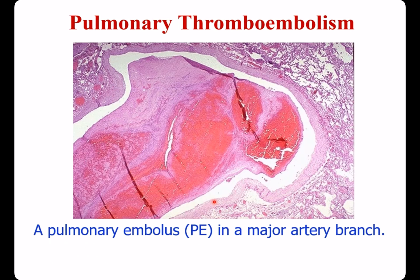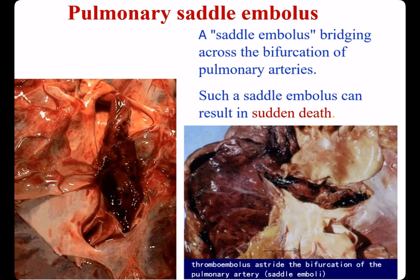Here is shown a thrombus in a main pulmonary artery. The two main pulmonary arteries are here; this is the bifurcation. A thrombus astride or across the bifurcation, bridging the two main pulmonary arteries, is called a saddle embolus. It may lead to the patient's sudden death.